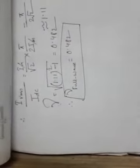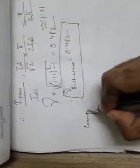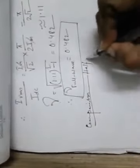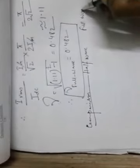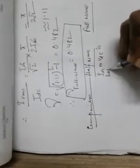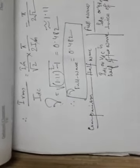Comparing the two rectifiers: I_DC and V_DC for a full wave rectifier are twice that of a half wave rectifier. Additionally, the ripple factor of a full wave rectifier (0.482) is smaller than that of a half wave rectifier (1.21), indicating better performance of the full wave rectifier.